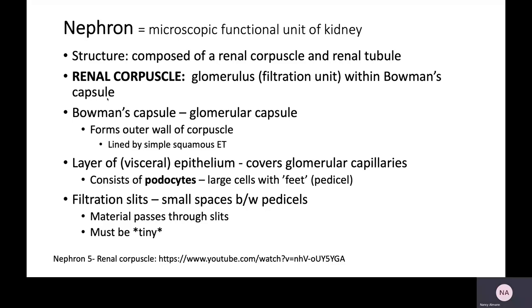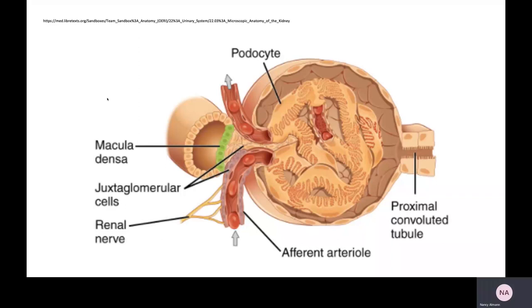Anything small enough will pass through those filtration slits, and whatever passes through has to be tiny. The very first step in urine formation is glomerular filtration.